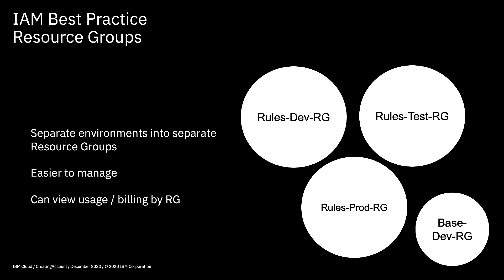In terms of resource groups, the best practice is to separate environments into separate resource groups. As an example, for a project called Rules I've created three different resource groups — one for each environment: development, test, and production — with a naming convention that clearly delineates which is which: rules-dev, rules-test, and rules-prod. This makes it easier to manage, and easier to grant the right access rights to different people or services. For instance, you can grant a developer rights to the dev resource group but keep them away from test and prod. You can also view usage and billing by resource group, so you can filter your billing report by resource group to see what each environment is costing you.